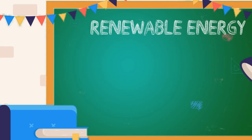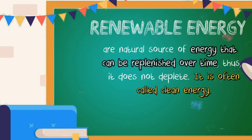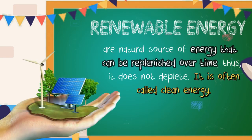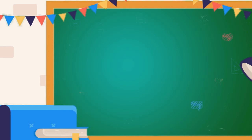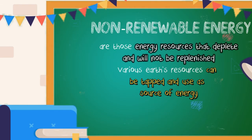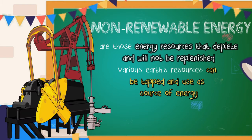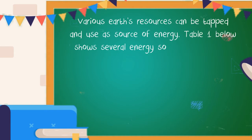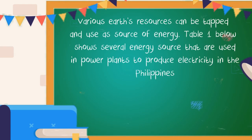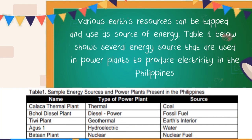Renewable energy resources are natural sources of energy that can be replenished over time — thus they do not deplete. It is often called clean energy. On the other hand, non-renewable energy resources are those that deplete and will not be replenished. Various Earth's resources can be tapped as a source of energy. Table 1 below shows several energy sources used in power plants to produce electricity.